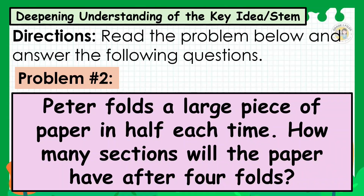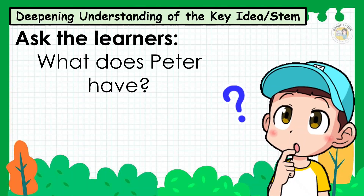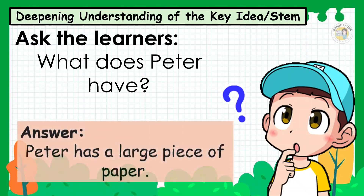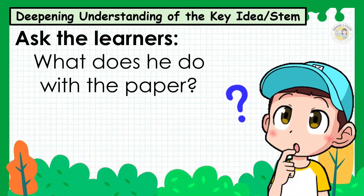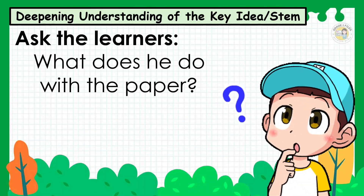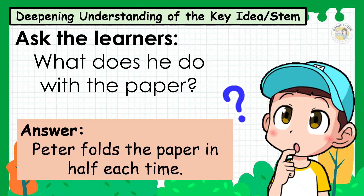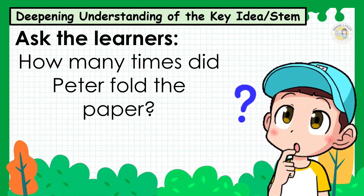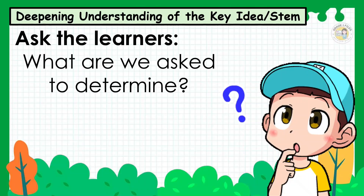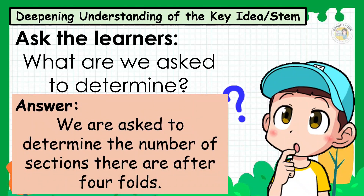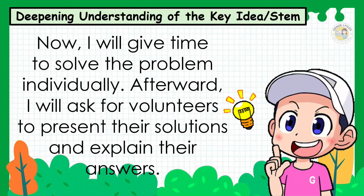For problem number 2: Peter folds a large piece of paper in half each time. How many sections will the paper have after 4 folds? Peter folded the paper 4 times. We are asked to determine the number of sections there are after 4 folds. I will give time to solve the problem individually. Afterward, I will ask for volunteers to present their solutions and explain their answers.